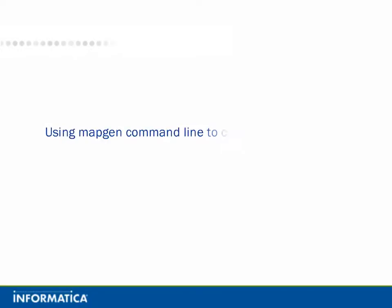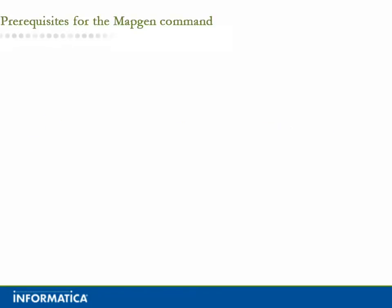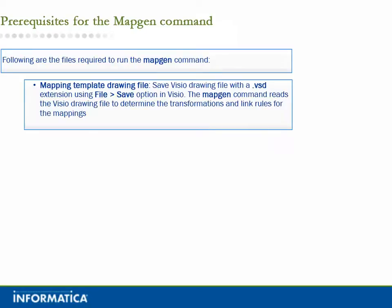Using MapGen command line to create mappings based on published mapping templates created in MAV. Prerequisites for the MapGen command: the following files are required to run the MapGen command. Mapping Template Drawing File — save the Visio drawing file with a .vsd extension using File > Save in Visio.